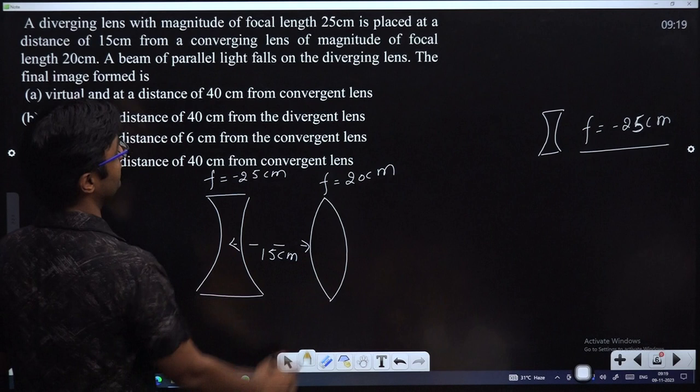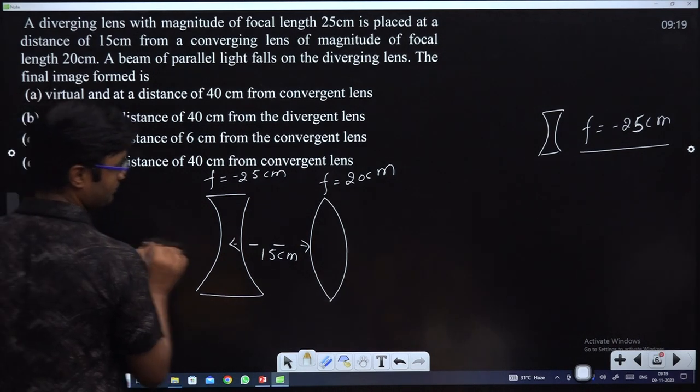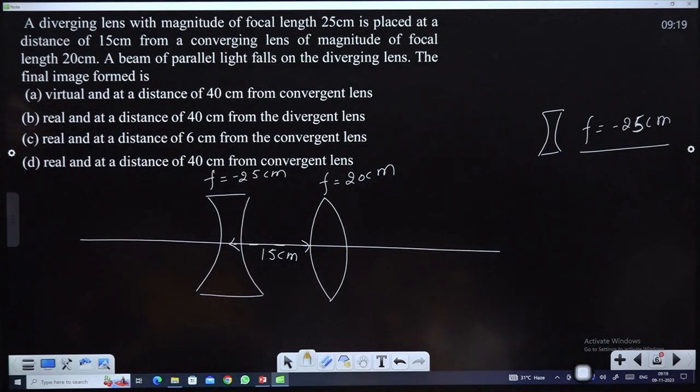So focal length minus 25cm, converging lens 20cm, distance between them 15cm. A beam of parallel light falls on the diverging lens.